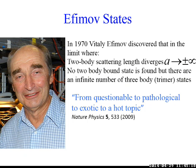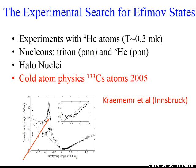Efimov states started in 1970 when Vitaly Efimov discovered the limit where the scattering length diverges. On the negative side, there are no two-body bound states, but there are an infinite number of three-body trimer states. Like many important discoveries in physics, his result — as he is quoted as saying — went from questionable to pathological to exotic to a hot topic. After Efimov made his prediction, people tried to look for Efimov states in experiments: helium-4, nucleons, triton, helium-3, halo nuclei. Efimov states were finally experimentally detected in cold atoms — a good system to see a lot of physics — with cesium atoms in Innsbruck.